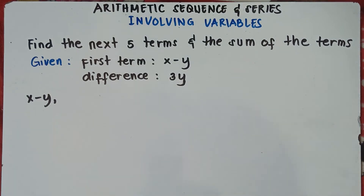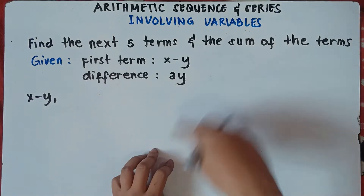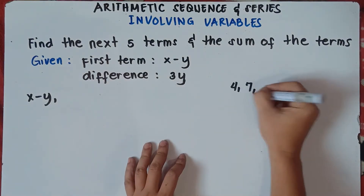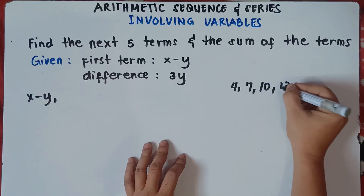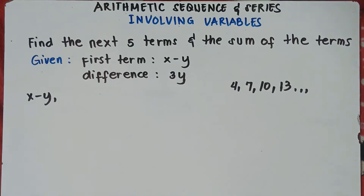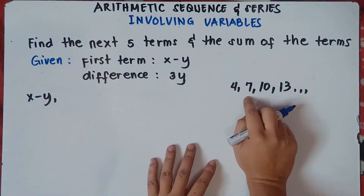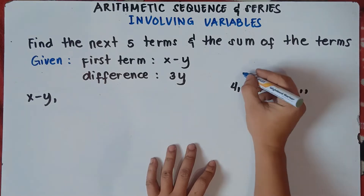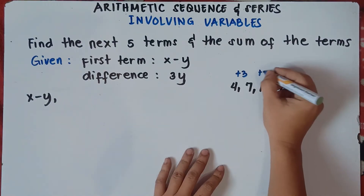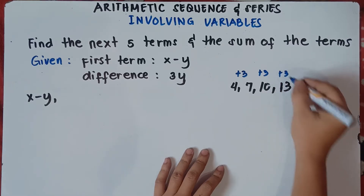Before answering this one, do you still remember class, in getting the common difference? If we don't have the variables, let's use numbers. Take 4, 7, 10, and 13, and so on. In getting the common difference, you just simply subtract the second term by the first term. So 7 minus 4 is 3, or positive 3. 10 minus 7 is 3. 13 minus 10 is positive 3.